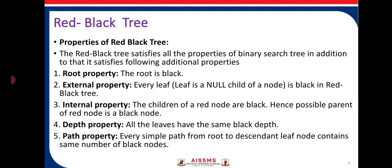The external property states that every leaf in a Red-Black Tree is black. The internal property states that the children of a red node are black, so the possible parent of a red node is always a black node. Intermediate nodes are either red or black depending on their parent's color: if the parent is red, the child is generated as black; if the parent is black, the children can be red.